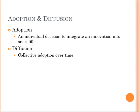In diffusion and adoption theory, what we're talking about is some type of innovation. That innovation might be a device being used in a particular organization, it might be a new process, or it might be anything that changes the way things are done within an organization. Adoption is an individual's decision to actually use that innovation. Diffusion is collective adoption over time throughout the organization.